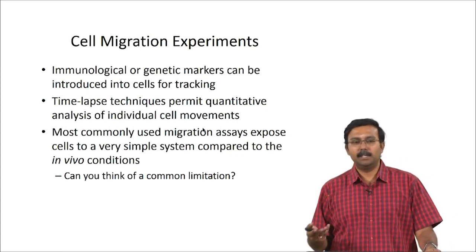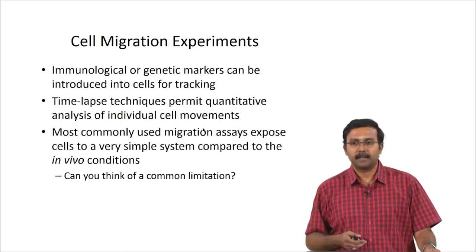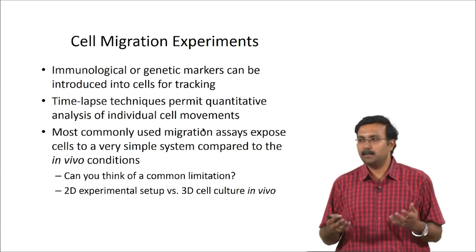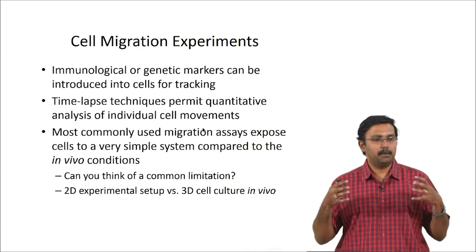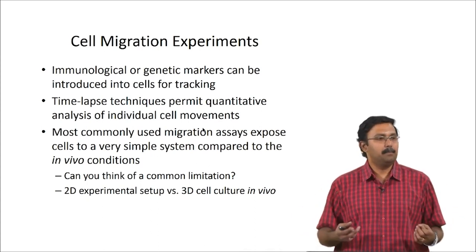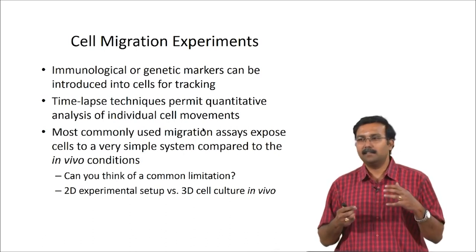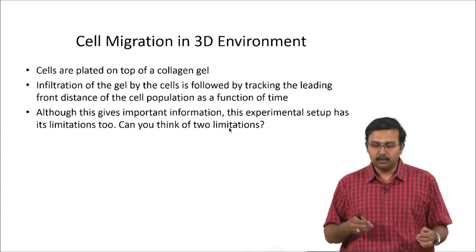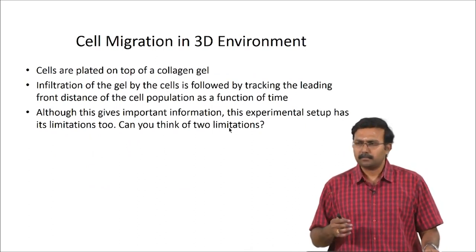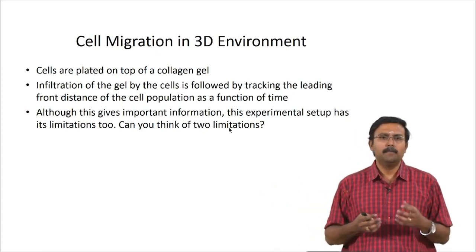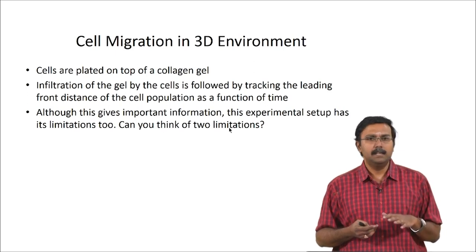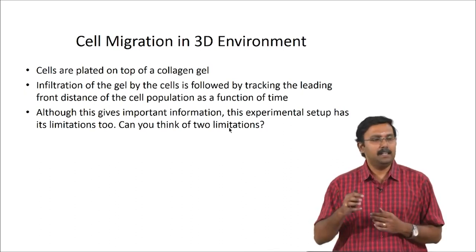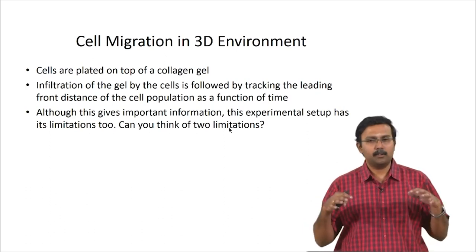A common limitation of simple migration assay systems is that most cell culture is done in a 2D setup — only when people work on tissues do they start looking at 3D setups. That is important because in a 3D environment migration directions also increase and you may have to observe things from different angles. For 3D migration, you basically have a collagen gel on which the cells are seeded and follow the cell infiltration into the gel by tracking the leading front of the cell population.